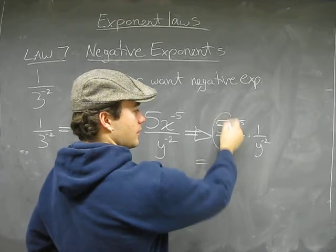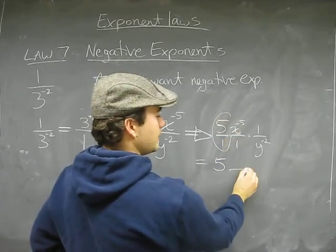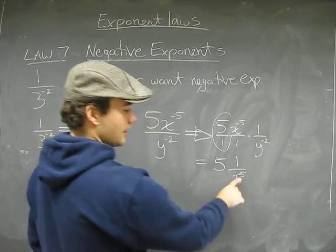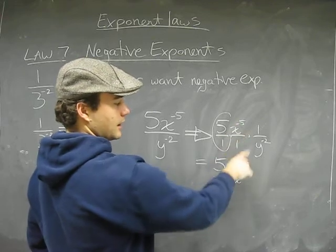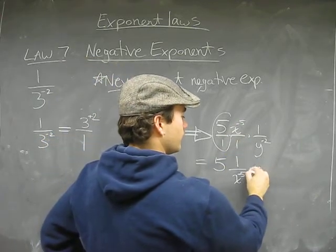Five is okay. We have to change this, so we'll flip the fraction and change the sign of the exponent—it went from negative to positive. Likewise here, we flip the fraction.